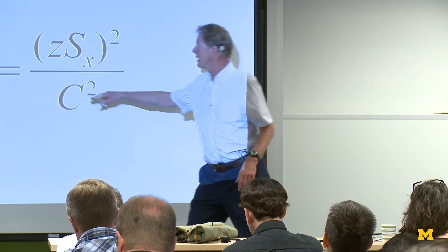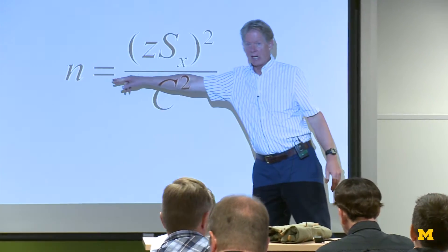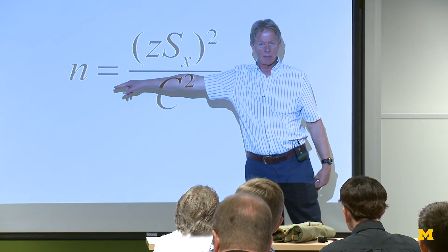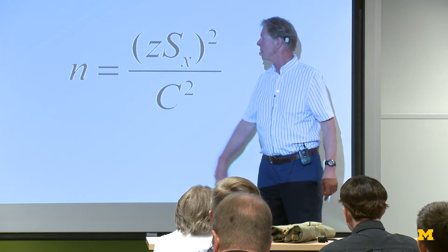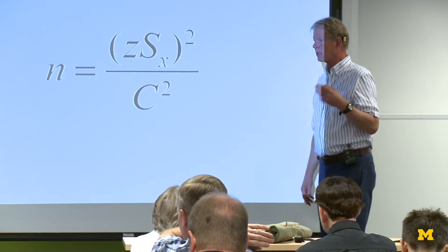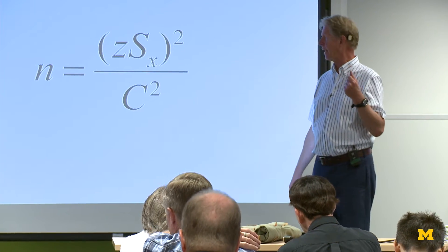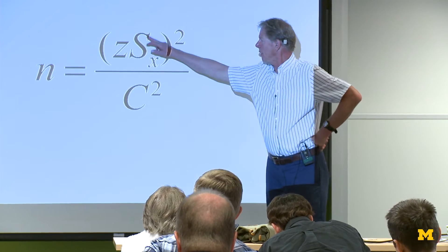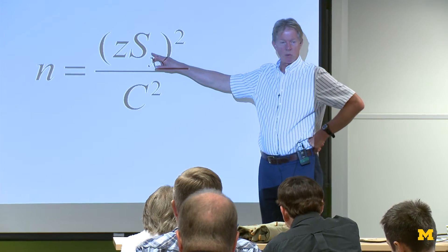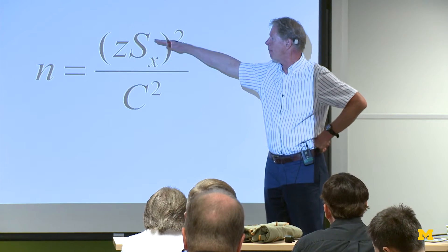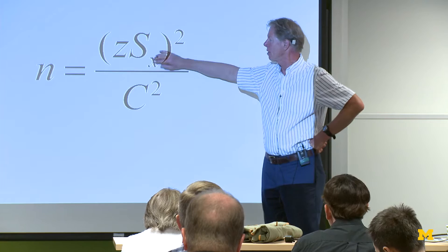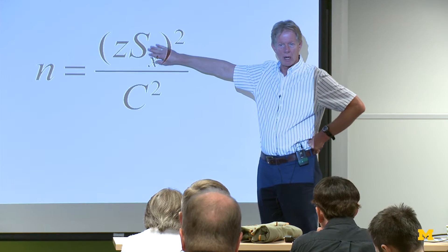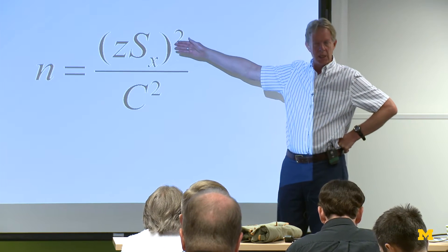In this formula, n is what we're trying to find — how many people, what's our sample size. There are actually three things that determine that. The variability S is one, and that's on the top of the equation. So the more variable we are, the more people we need to measure.